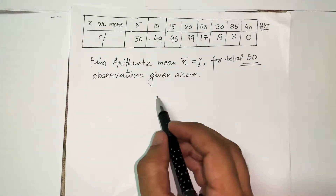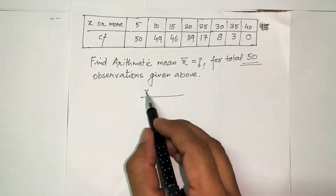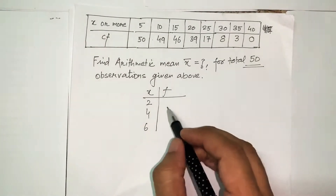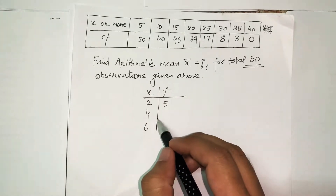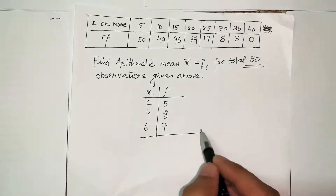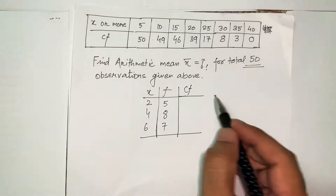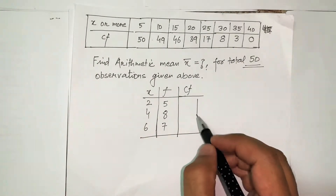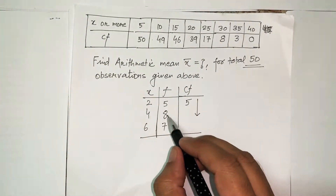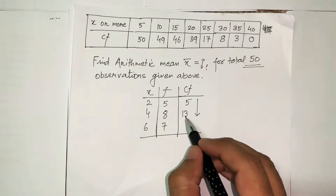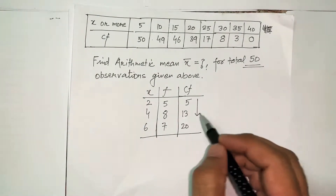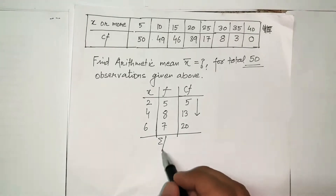Cumulative frequency can be accumulated in two directions. Suppose x has three values: 2, 4, 6, with frequencies 5, 8, and 7. To find cumulative frequency from top to bottom: the first value is 5 itself, the second is 8 plus 5 = 13, and the last is 13 plus 7 = 20. The total number of observations here is 20.